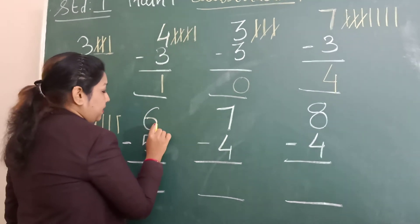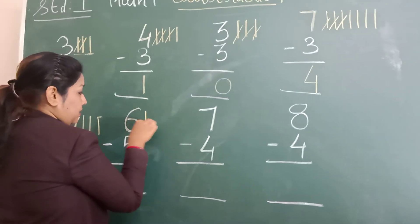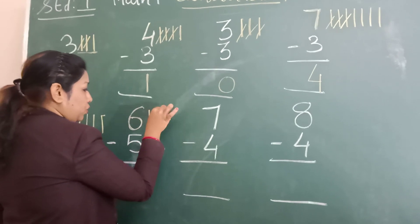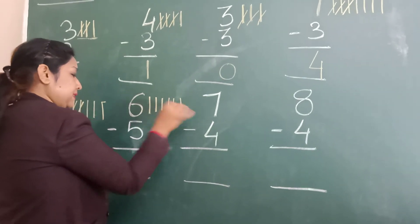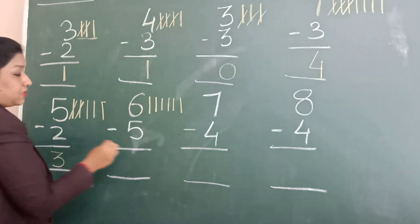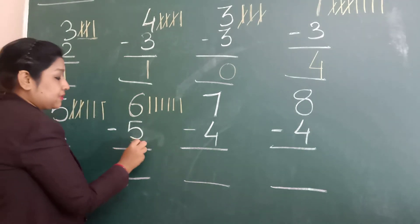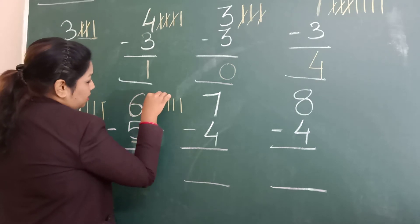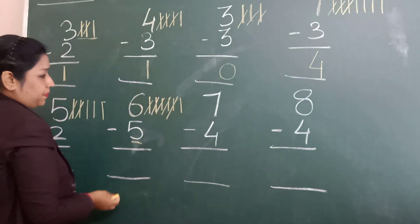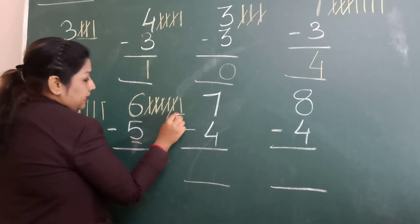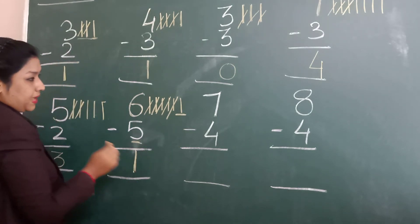Now here we have the next sum. How many lines you will draw? 6. And how many lines you will cut? Yes, 5 lines: 1, 2, 3, 4, 5. How many lines remain? 1. And the answer is 1.